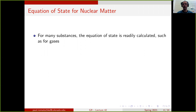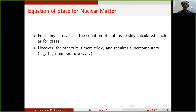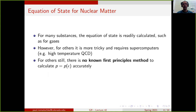For many substances, the equation of state is readily calculated. An example would be gases, where you can take the Boltzmann equation to calculate the equation of state. There are others that are more tricky to calculate, in particular for strong interactions governed by QCD. This requires supercomputers if you want to get the equation of state for high-temperature QCD.